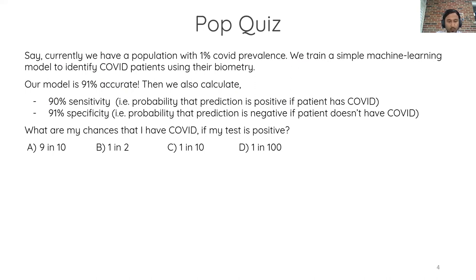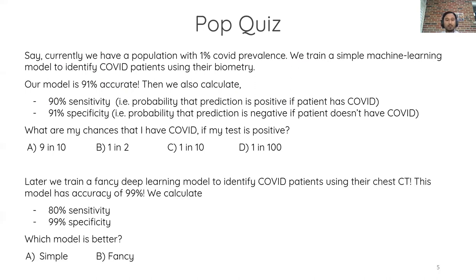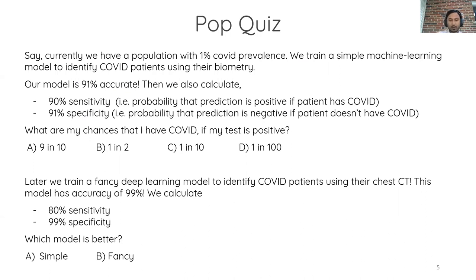There is also an associated question. Instead of a simple biometric model, we now train a fancy deep learning model to identify COVID patients using their CT scan. This model has a much improved accuracy of 99%, with specificity of 99% and sensitivity of 80%. The question is: which one is better? Feel free to pause the video, and I'll get to the answers later in the presentation.